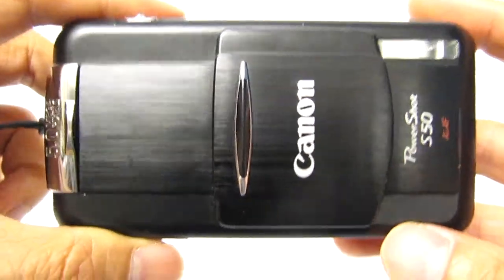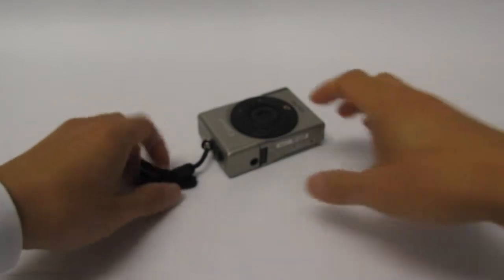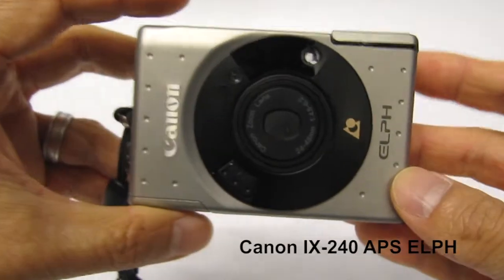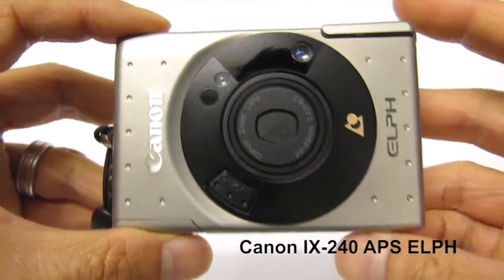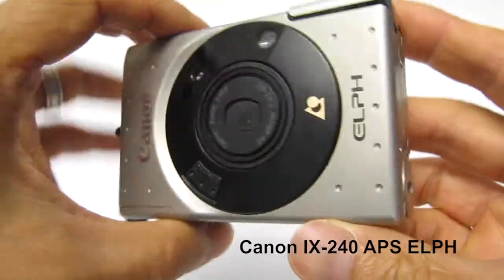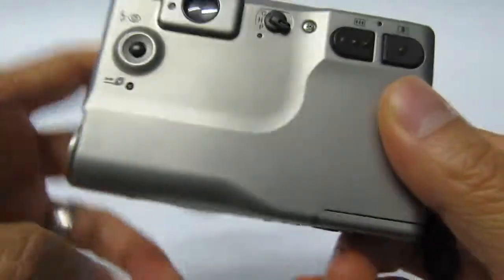I'll show you the wrist strap that I found worked the best. So digging way back into my closet, I found my original Canon ELF that I had just stored away in a box. This is the original APS film camera. This is the original ELF, it's a pretty lightweight camera.